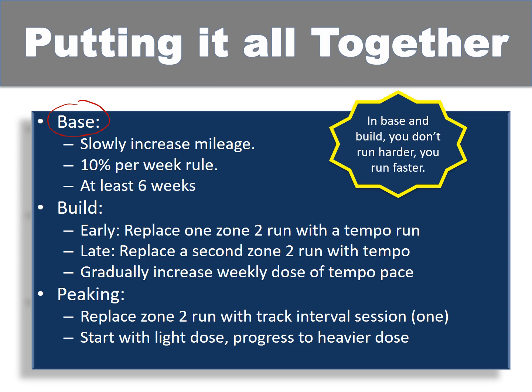To reiterate the important points: in base, we're just slowly increasing mileage using the 10 percent rule, with at least a six-week base period — more is better. In build, early on we replace one zone two run with a tempo run, and later replace a second zone two run with a tempo run, ending up with two tempo runs and gradually increasing the dose of tempo per week from perhaps 10 minutes to 40 minutes over the six-to-eight-week period. In peaking, we simply replace a zone two run with a track interval session — just one. Start with a light dose of one mile total and progress toward a heavier dose of two miles total.